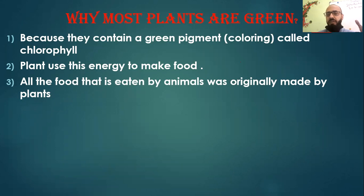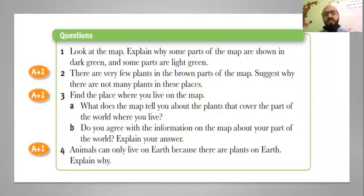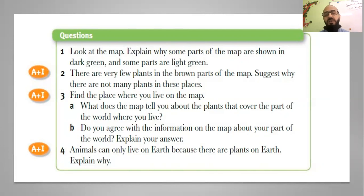Now for the questions: look at the map and explain why some parts are shown in dark green and some parts are light green. As we explained, there are very few plants in the brown parts of the map. Why are there not many plants in those places? Because there is no water, so plants cannot make their own food.